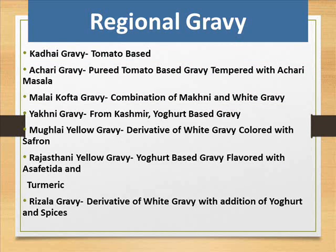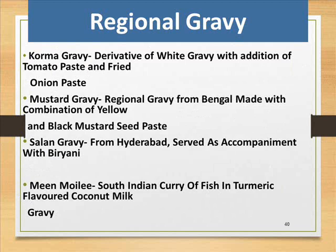Regional gravies: Kadhai gravy — tomato based; Achari gravy — pureed tomato-based gravy tempered with achari masala; Malaikofta gravy — a combination of Makhani and white gravy; Yakni gravy — from Kashmir, a yogurt-based gravy; Mughlai yellow gravy — derivative of white gravy colored with saffron; Rajasthani yellow gravy — yogurt-based gravy flavored with asafetida and turmeric; Rezala gravy — derivative of white gravy with addition of yogurt and spices; Qorma gravy — derivative of white gravy with addition of tomato paste and fried onion paste; Mustard gravy — regional gravy from Bengal made with a combination of yellow and black mustard seed paste; Salan gravy — from Hyderabad, served as accompaniment with Biryani; Meen Moilee — South Indian curry of fish in turmeric-flavored coconut milk.